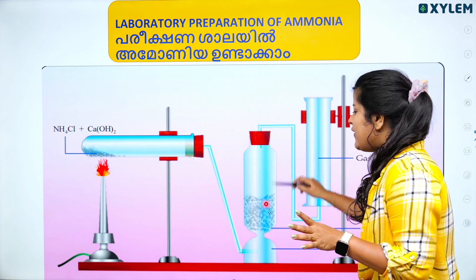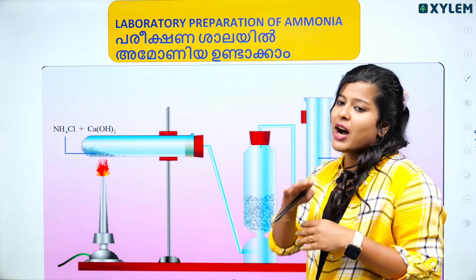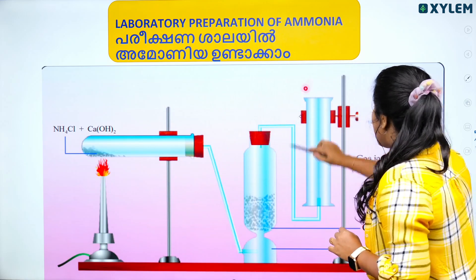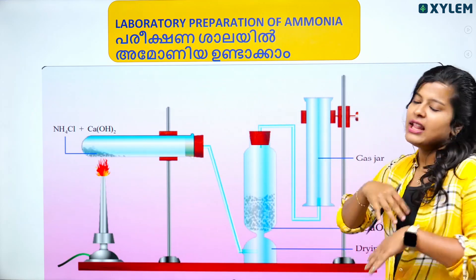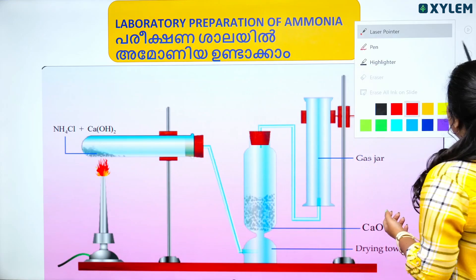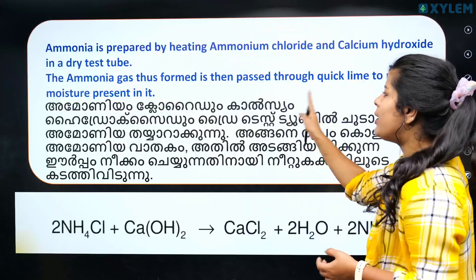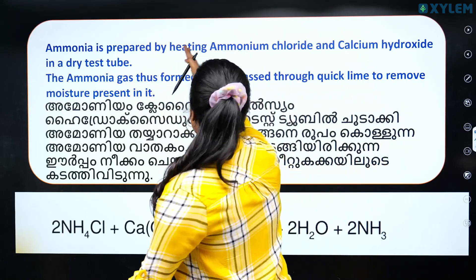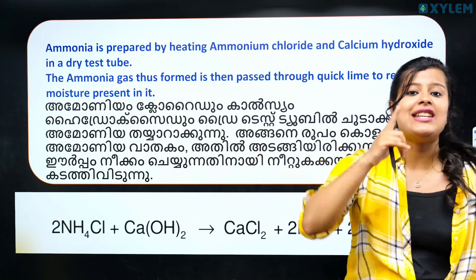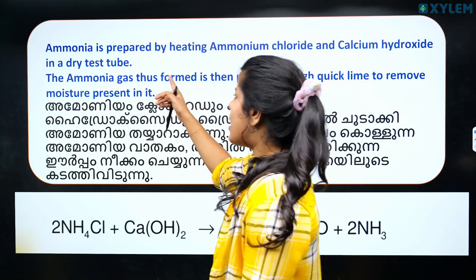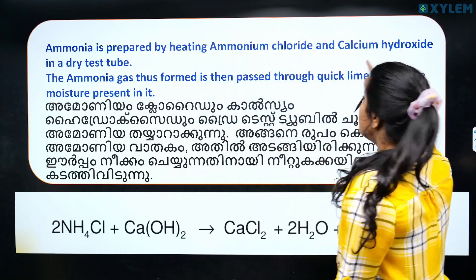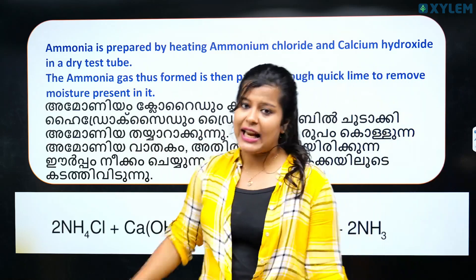We absorb the water — maximum absorption. In an inverted gas jar, we collect the ammonia. Ammonia is prepared by heating ammonium chloride and calcium hydroxide in a dry test tube. The ammonia gas formed is then passed through CaO to remove the moisture present in it.